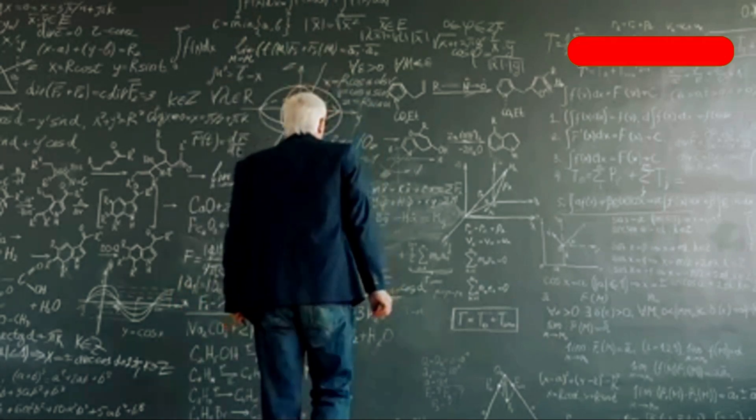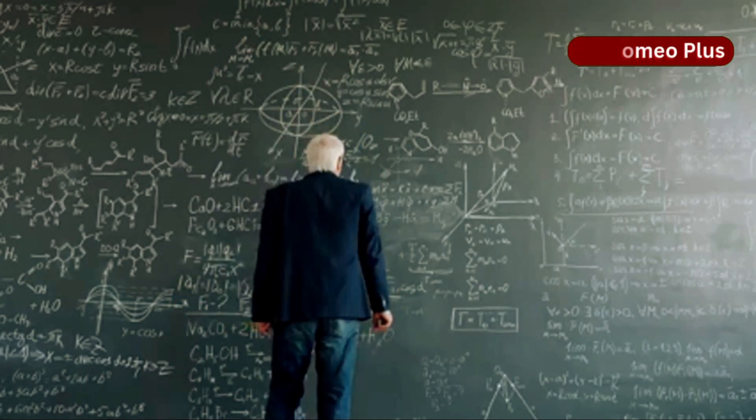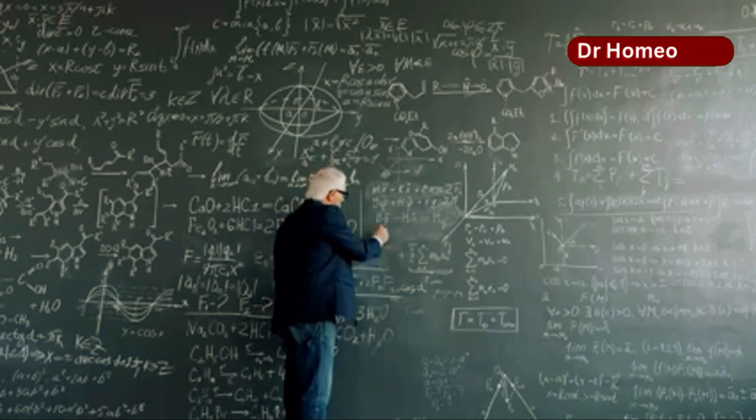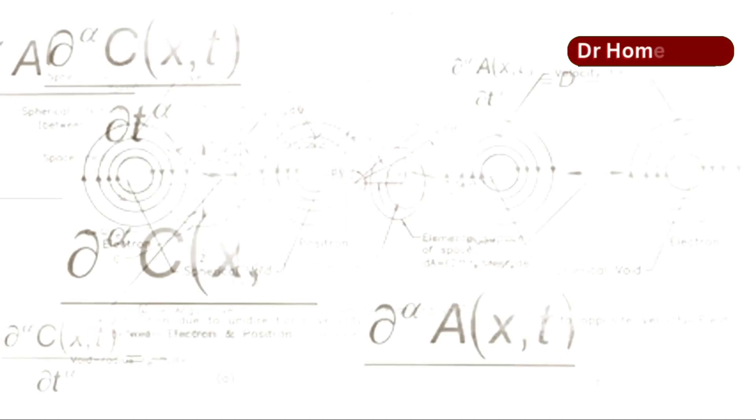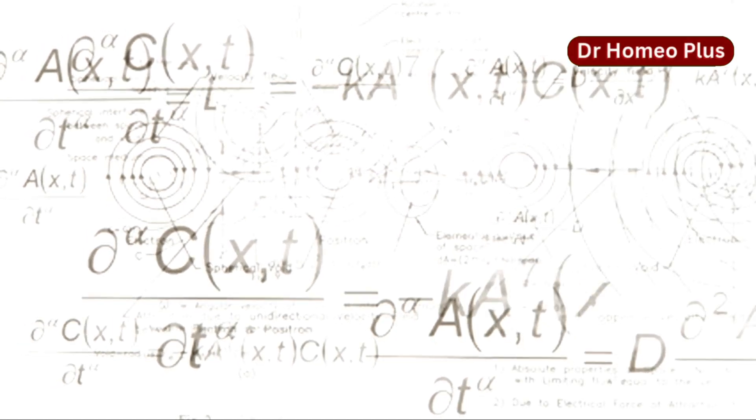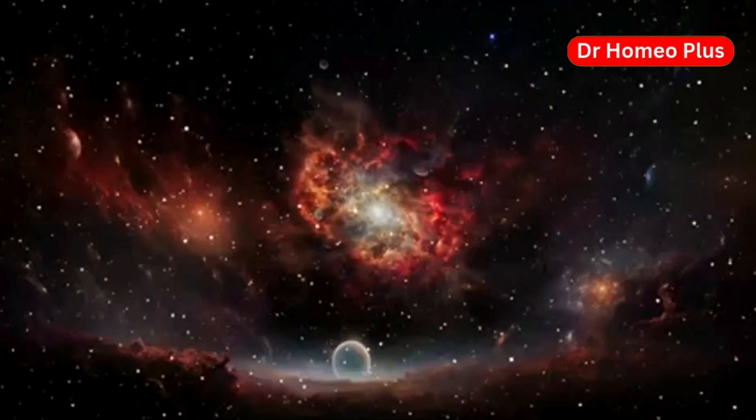Some physicists believe that the singularity is not a physical reality. Instead, it is a mathematical artifact of our incomplete theories. They argue that quantum gravity, a theory that unifies general relativity and quantum mechanics, will provide a more complete description of the very early universe.